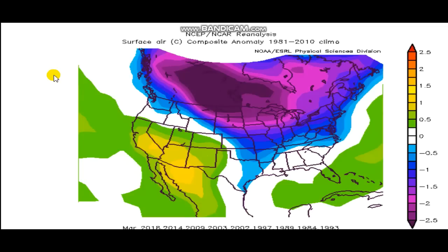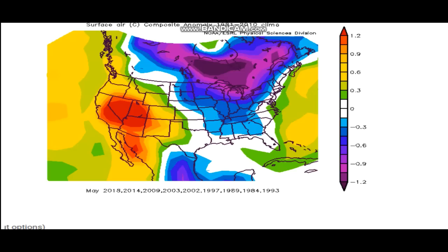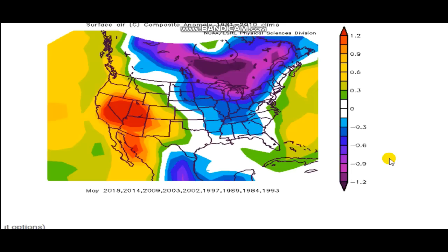Now I'll go through month by month for those specific analog years — March 2018, 2014, 2009 — that's basically March of those springs. Then April, then May. You can see all of them were pretty chilly for these years combined. If you look at the scale, the increments are smaller because of all the years combined, and when there is a difference like this it's significant — that's what the increments are meant to emphasize.